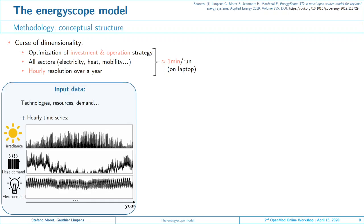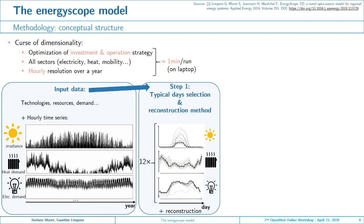How do we manage that? When we look at the data, there is a lot of redundancy in the 8,760 hours of a year — many days are similar. What we do is cluster these days together to form typical days: we represent all 365 days of the year with only 12 typical days. Using an accurate reconstruction method, we are able to represent the full 365 days while being accurate enough.